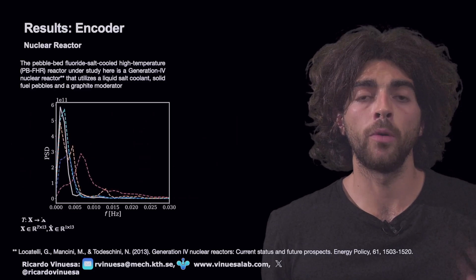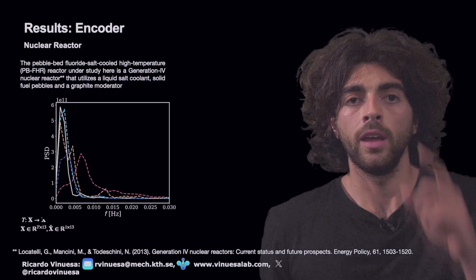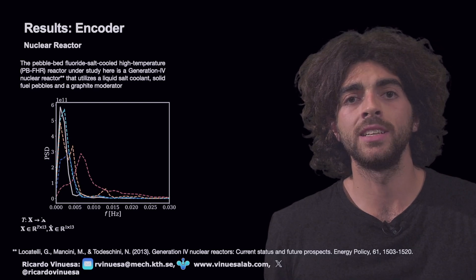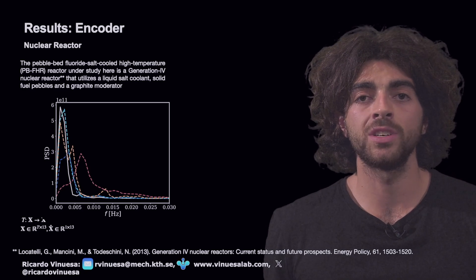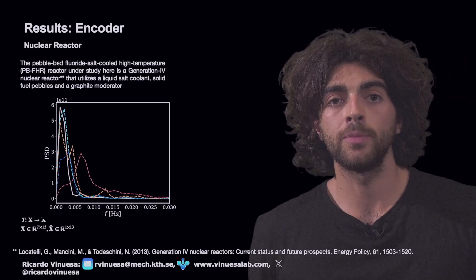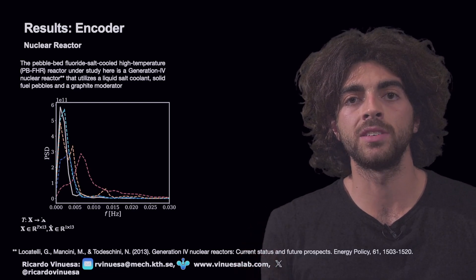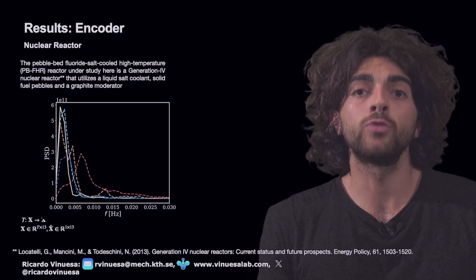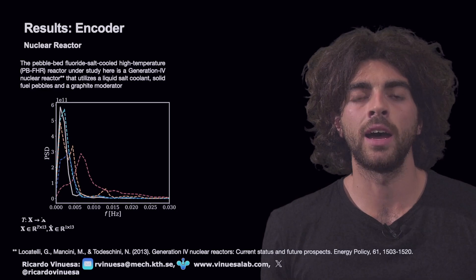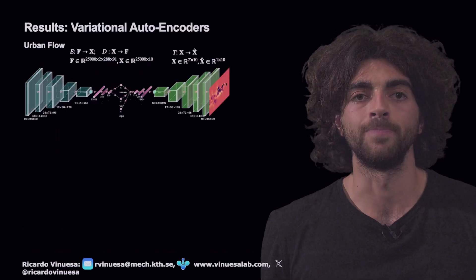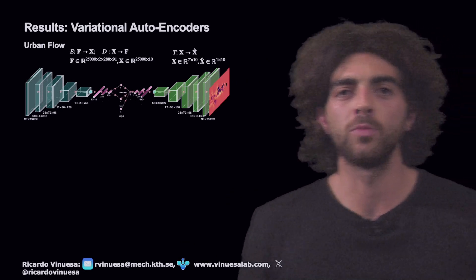Diving into the power spectral density of the core flow — cyan for E-attention, yellow for self-attention — one can see that the self-attention is able to localize the peak of the signal, however the amplitude or power of this frequency is not well captured. The E-attention on the other hand captures the amplitude of this frequency, though the frequency is slightly shifted to the right. Still, it retrieves the evolution of the power spectral density, showing a similar rate of decay between the first and second peak.